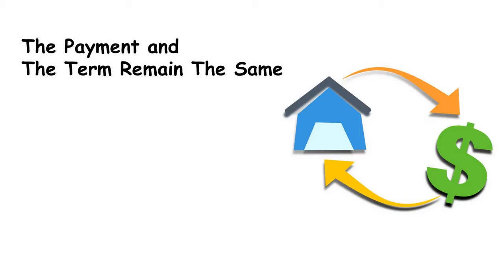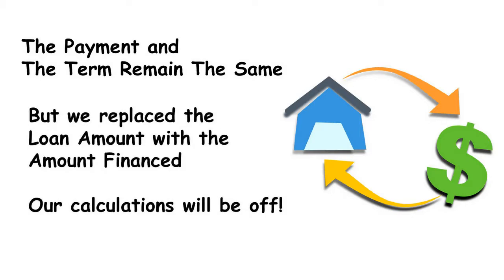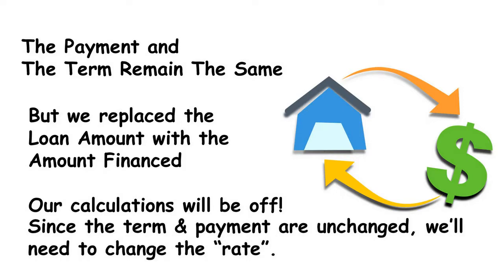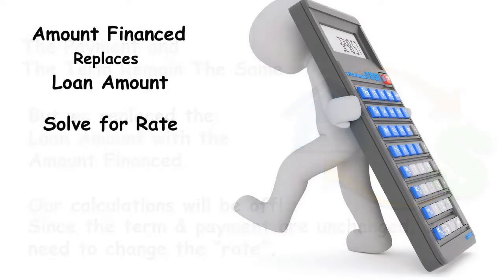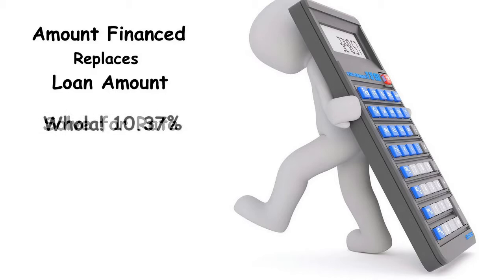The payment stays the same and you'll still have to make the same number of payments. But here's the issue: since we replace the loan amount with the amount financed, our calculations will be off — something else needs to change. Since we didn't change the term or the payment, we'll need to change the rate. We go back to our calculator and put the amount financed where the loan amount used to be, and this time instead of solving for the payment, we solve for the rate. We push a few more buttons and the calculator now says 10.37% where the 10% rate used to be.